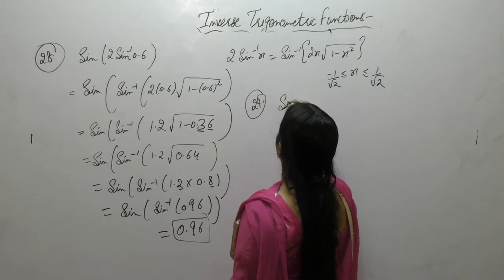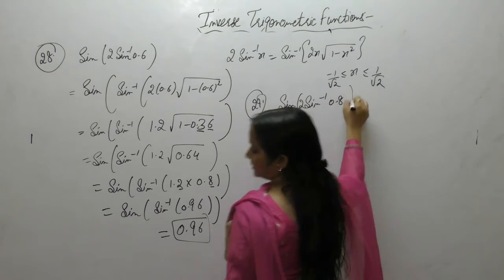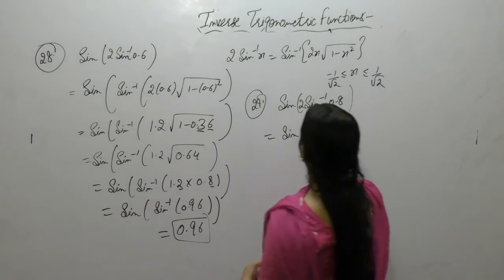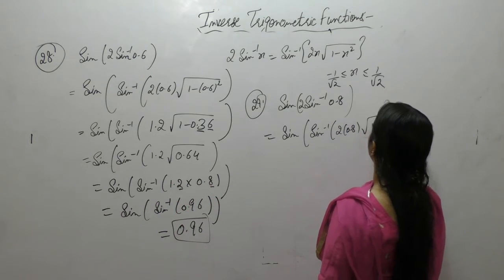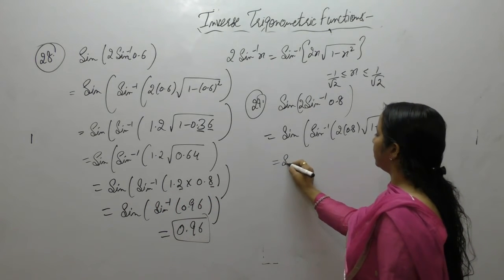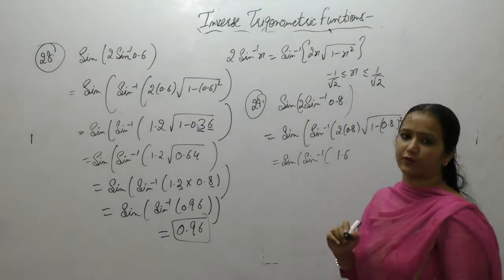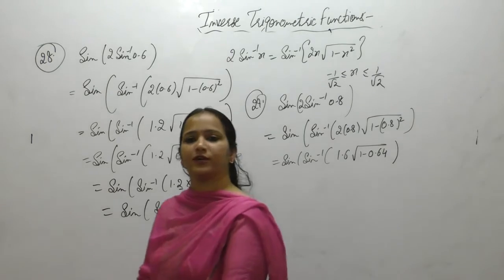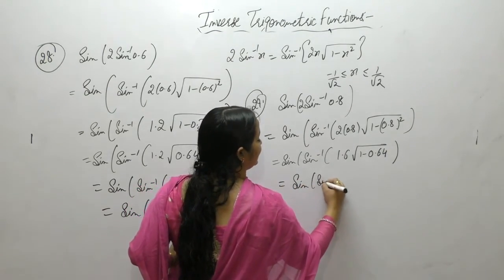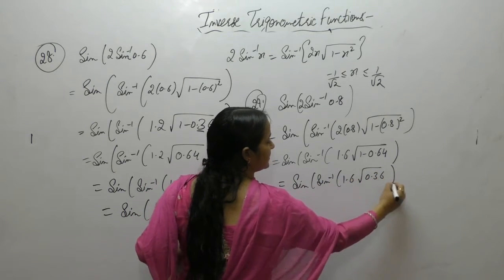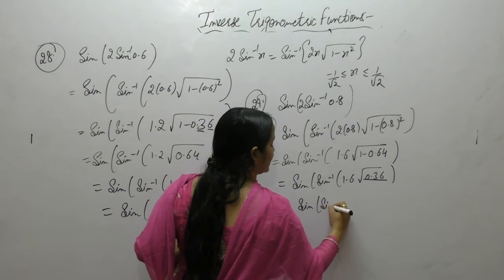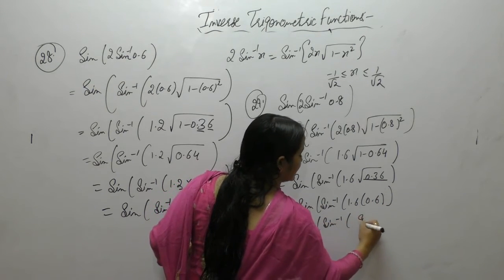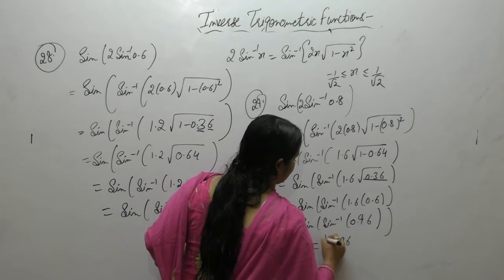Next: evaluate sin(2sin⁻¹(0.8)). Again apply the formula 2sin⁻¹x = sin⁻¹(2x√(1-x²)). So sin(sin⁻¹(1.6 × 0.6)): 8×2 is 16, giving 1.6; 1 minus 0.64 is 0.36, and √0.36 = 0.6. Then 16×6 is 96, decimal after 2 digits gives 0.96.